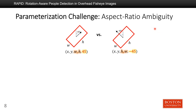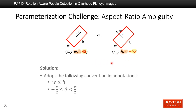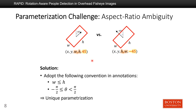Another problem about rotated bounding boxes is the aspect ratio ambiguity. As shown in the figure, a rotated bounding box has two equivalent parameterizations: (x, y, w, h, 45 degrees) and (x, y, h, w, minus 45 degrees). To solve this problem, we adopt the following convention in annotations: we define the shorter side of the bounding box to be width and the longer side to be height, and define the angle between minus pi over 2 to pi over 2. Under this rule, each bounding box corresponds to a unique parameterization. By using the periodic loss and this parameterization rule, the network can learn to predict arbitrarily oriented bounding boxes.